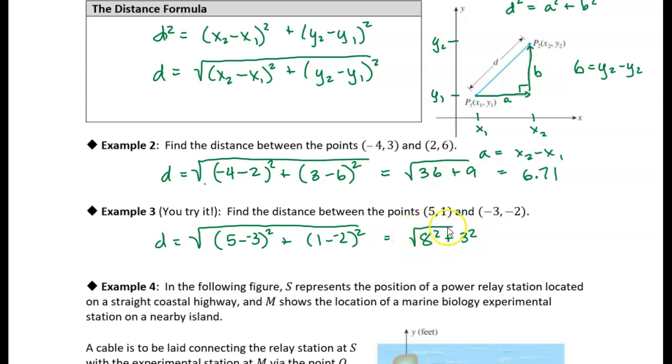So 64 plus 9, what is that? Square root of 72. But let's just write it as a decimal. And so the answer will be 8.54. So I'll meet you in the next video for the next example. Thank you.